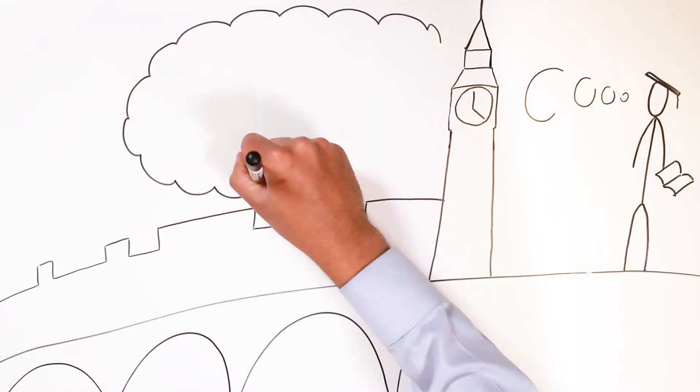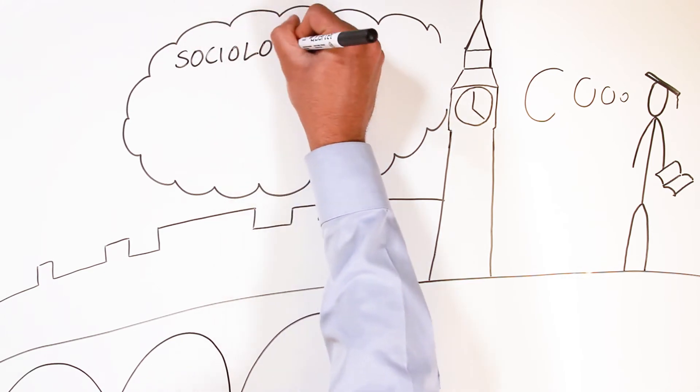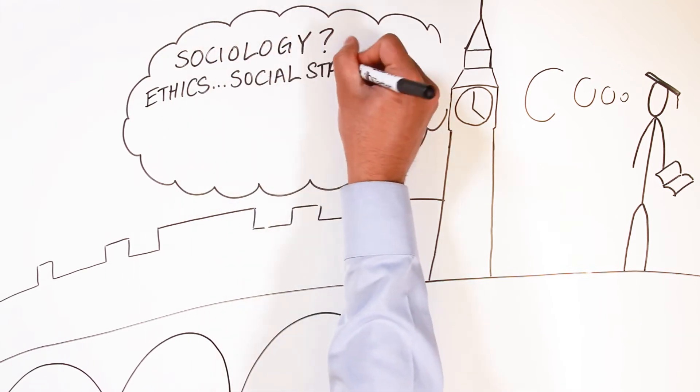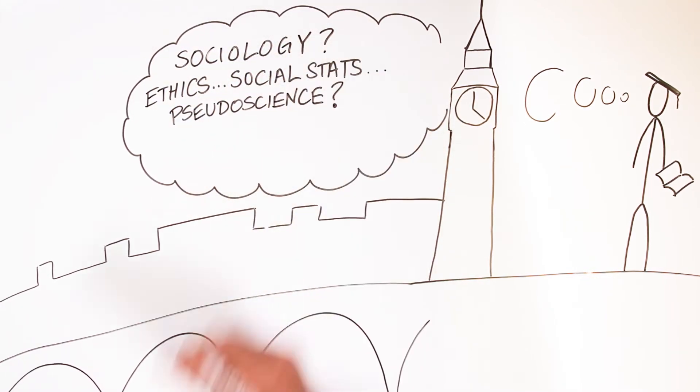So he goes to the London School of Economics and he chooses to study sociology. Well, he quickly learns that that's the wrong path because he says sociology is a combination of ethics, social statistics, and pseudoscience.